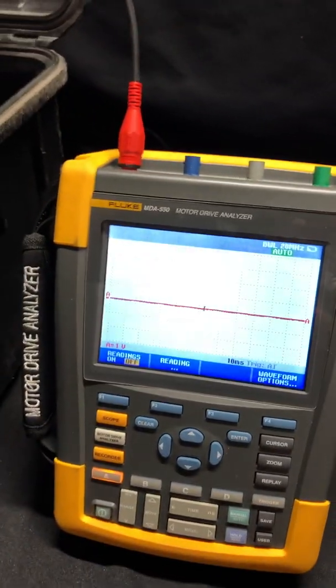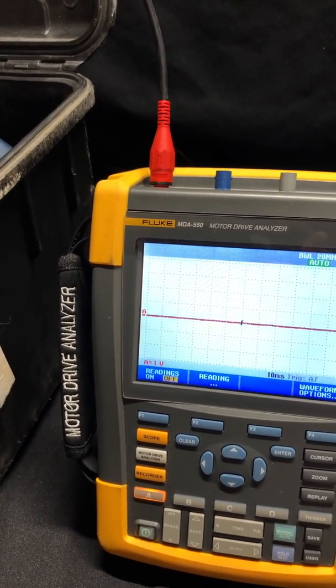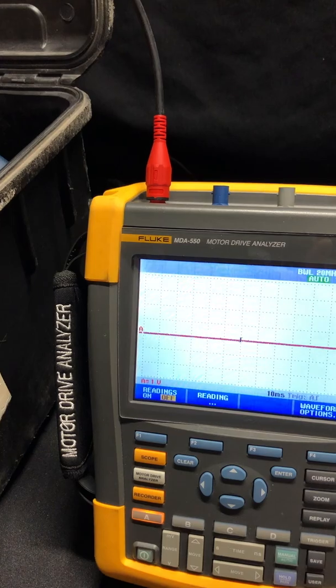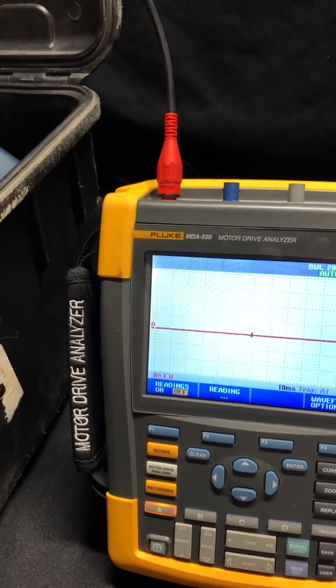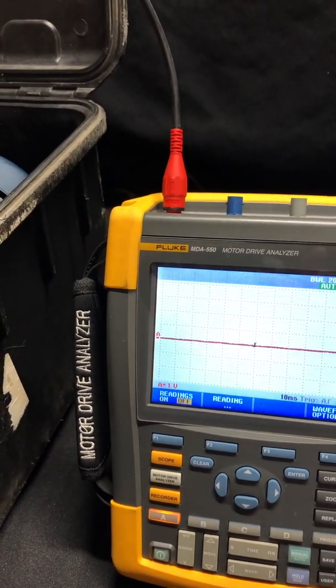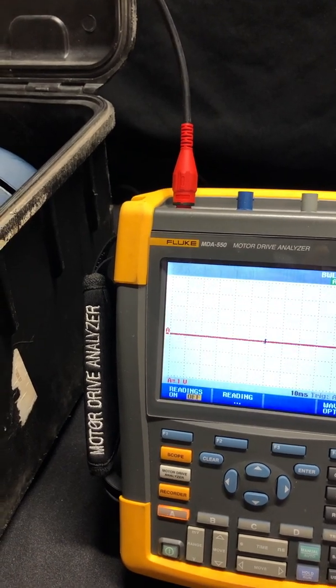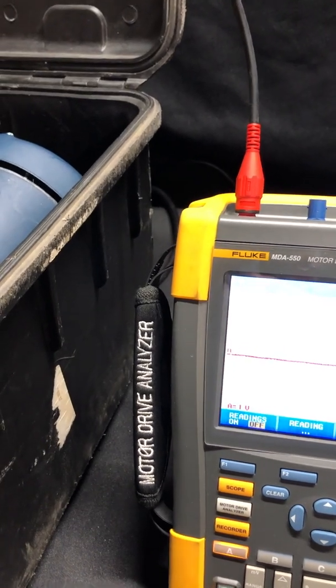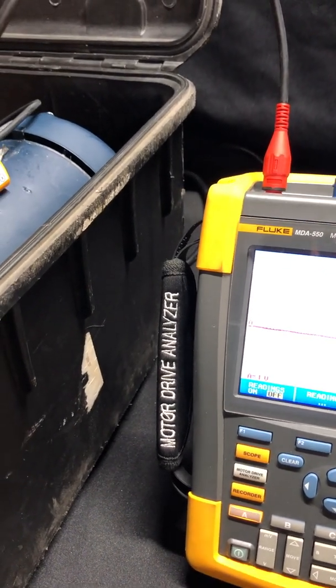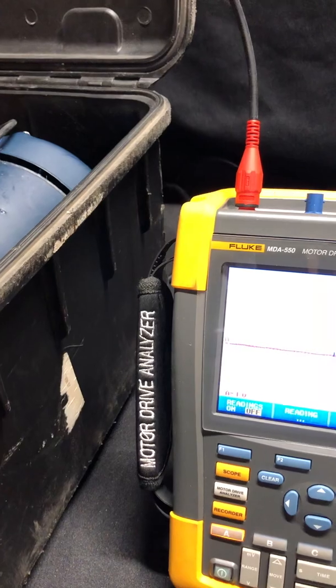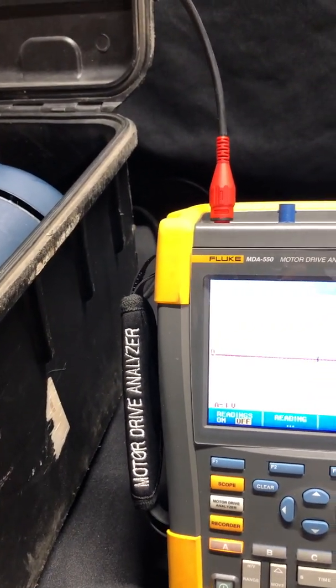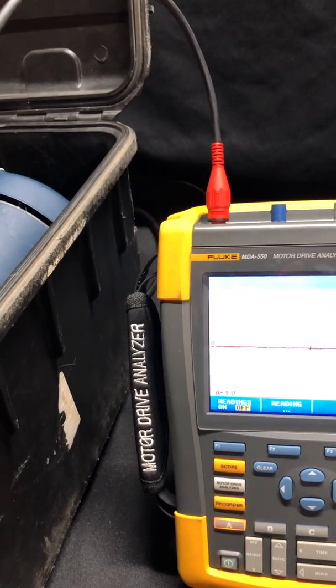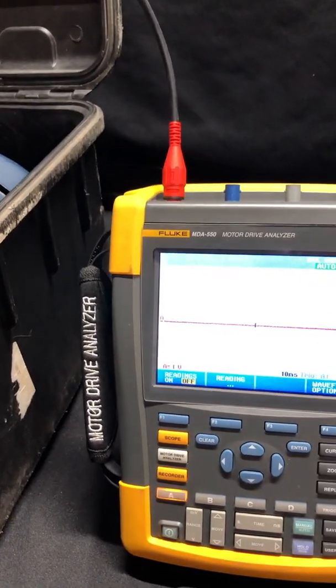This tool we call a motor drive analyzer and it's basically a scope meter with some integrated tests we can perform on VFD applications. In this case, I want to look at the output signal from the drive and determine if any output reflections exist, which could damage the new motor. Output reflections are short microbursts of power that can show up on the PWM signal of the drive. If these reflected waveforms are high enough, they can prematurely damage the new motor we just installed and we will continue to chew through motors.